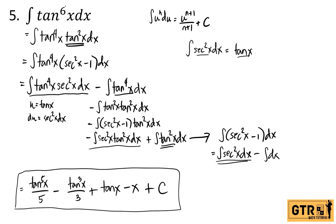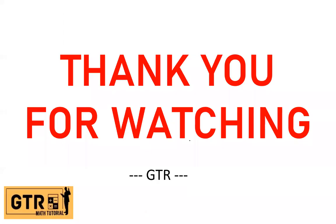If the exponent of tangent is even, we just repeat the process until all terms are integrable — using case 1 for tangent to the 4th x times secant squared x dx, applying u equals tangent x. That's it. Thank you for watching, and see you in my next video tutorial about powers of cotangent and cosecant. Bye-bye and God bless.